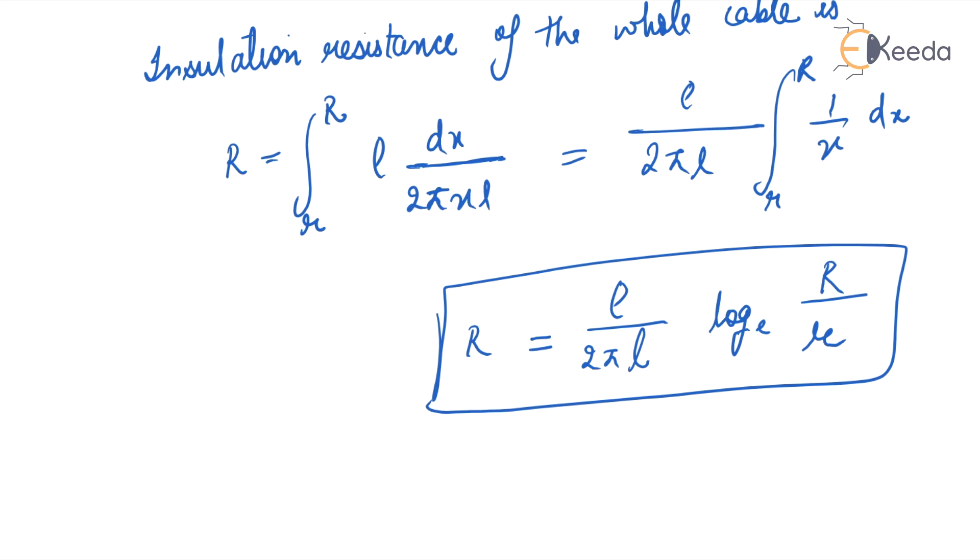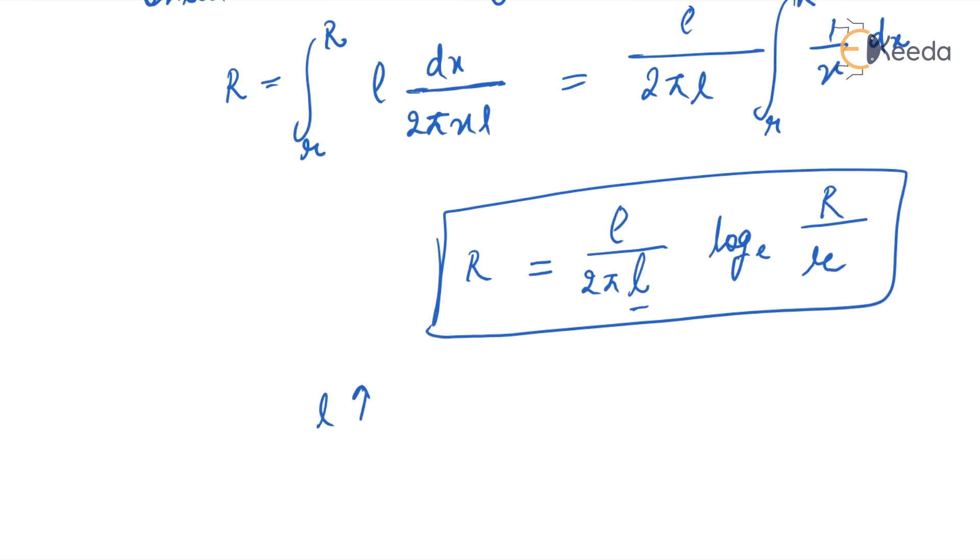This shows that the insulation resistance of a cable is inversely proportional to its length. In other words, if the cable length increases, the insulation resistance R decreases, or vice versa. Thank you.